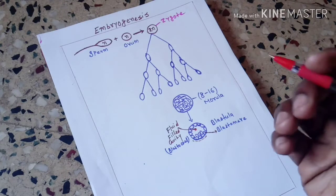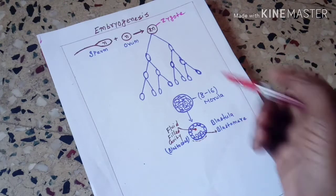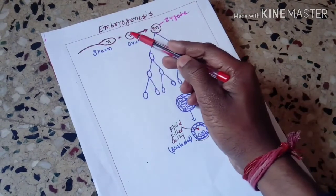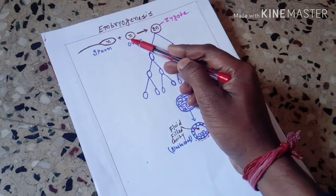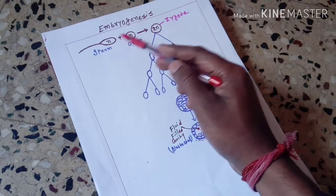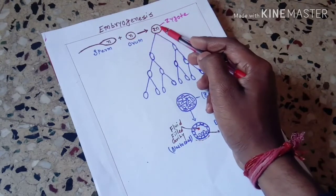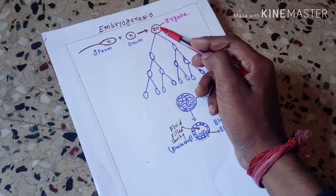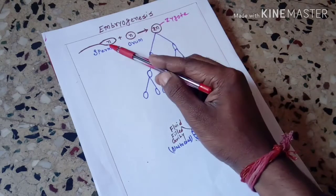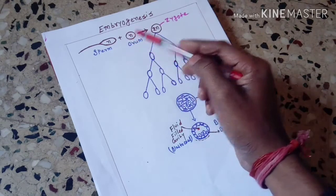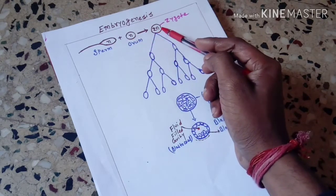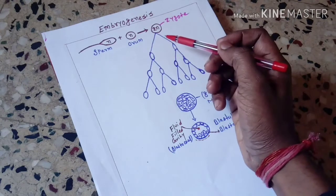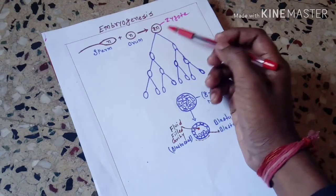First, the sperm — the male gamete — and the ovum — the female gamete — fuse with each other and form a zygote. As we know, the fusion of male gamete and female gamete results in zygote formation. Both are haploid, and when they fuse together, they make a diploid cell — the zygote.